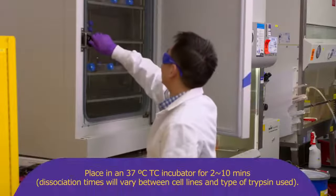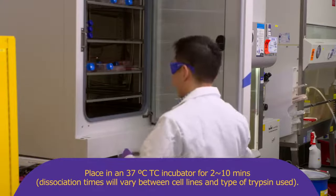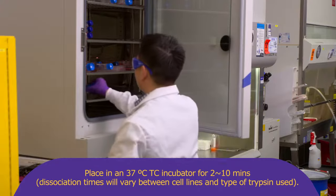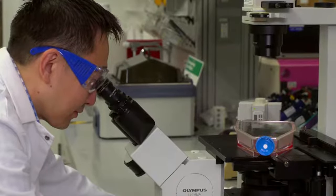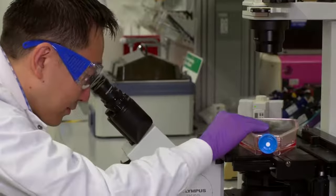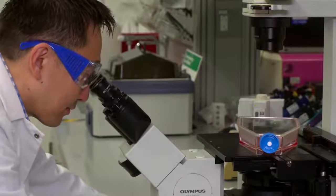Place in 37 degrees Celsius tissue culture incubator for 2 to 10 minutes. Check flask frequently under the microscope to ensure that greater than 90 percent of the cells have dissociated from flask surface.